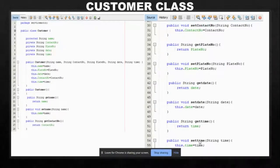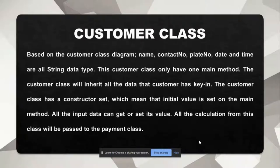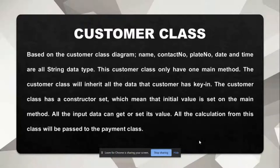Assalamualaikum, my name is Wanur Patricia and I will continue to the next part. This is the coding for the customer class. Based on the customer class diagram, name, contact number, plate number, date, and time are all string data types. This customer class only has one main method. The customer class will inherit all the data that the customer has entered. The customer class has a constructor set, which means that the initial value is set in the main method. All the input data can get or set its value. All the calculation from this class will be passed to the payment class.